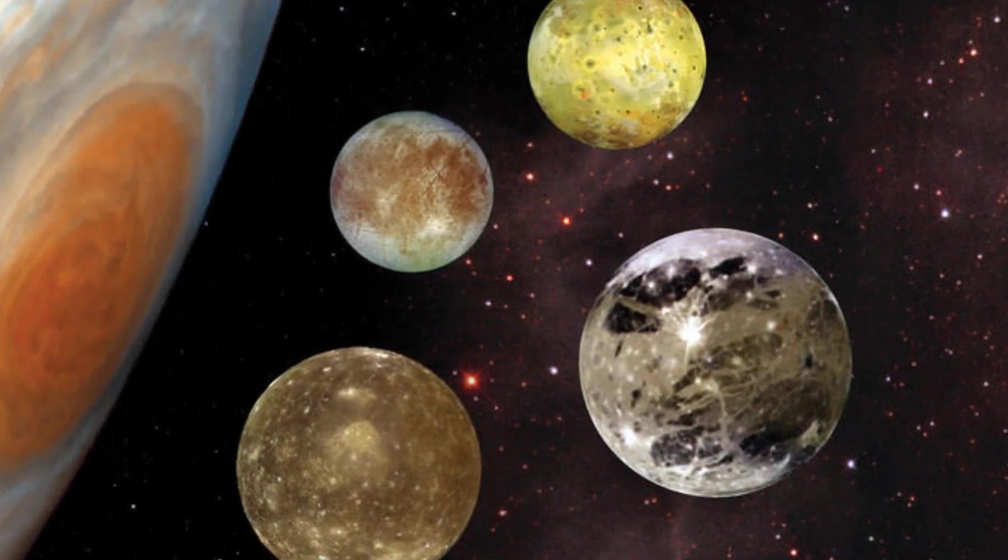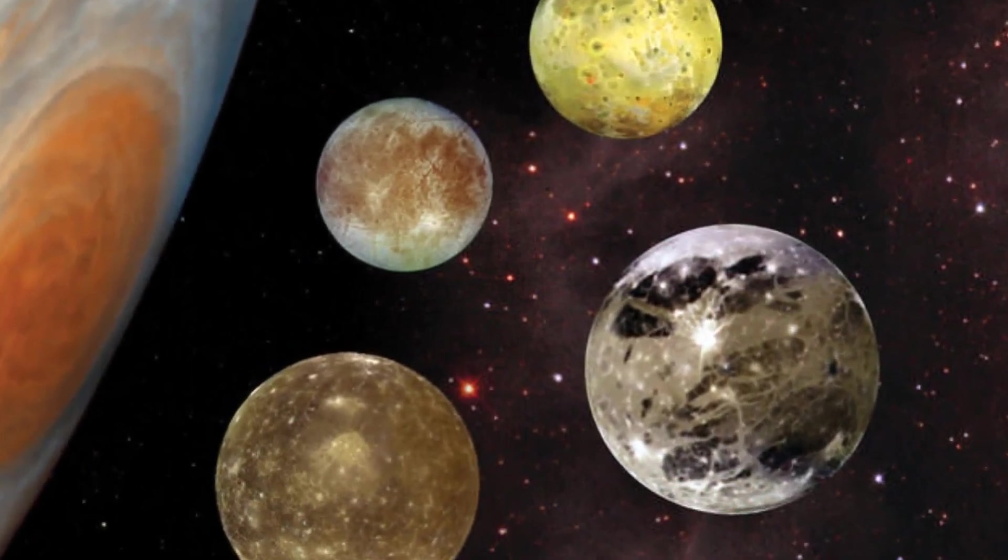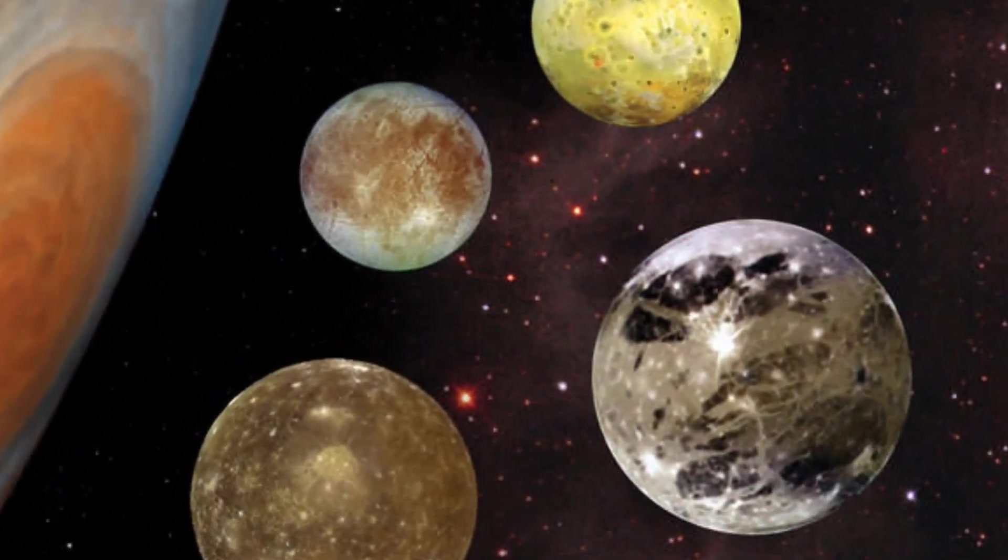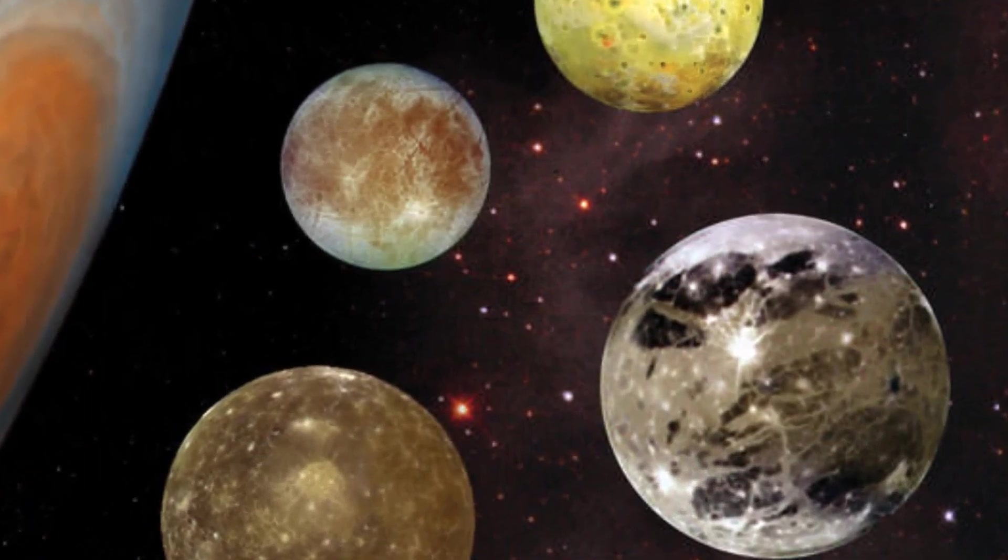Alongside the three other Galilean moons Io, Ganymede, and Callisto, Europa orbits the biggest planet of our solar system, Jupiter.